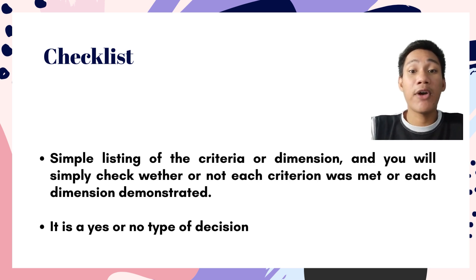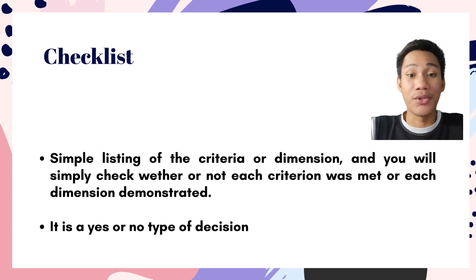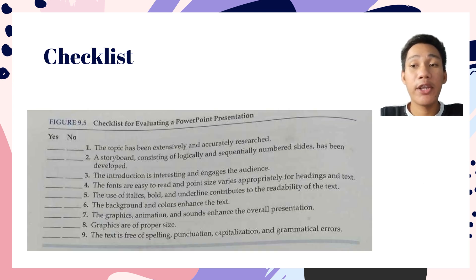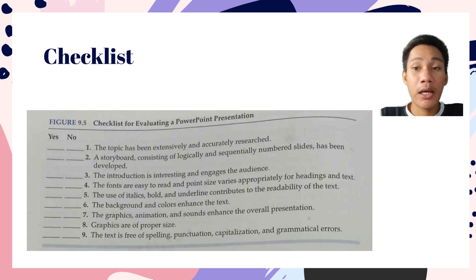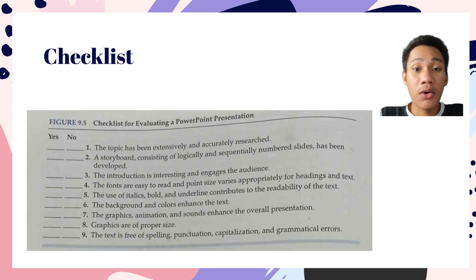Checklists are good for evaluating a sequence of steps that are required, and it is only a yes or no type of decision. For example, a checklist for evaluating a PowerPoint presentation — as you can see, there are two columns, one for yes and one for no, and beside the number are the descriptions or criteria. You just have to check whether the PowerPoint presentation was able to meet the guidelines or the goal of the presentation.